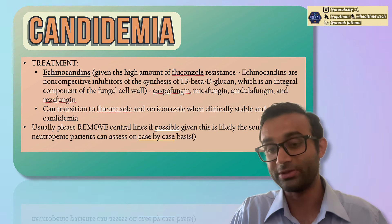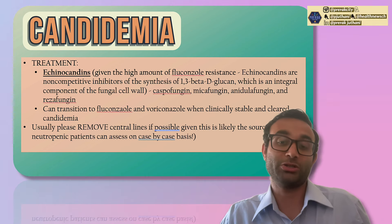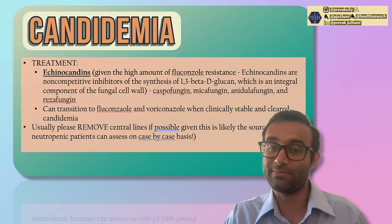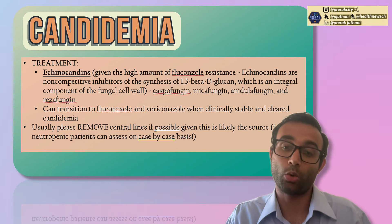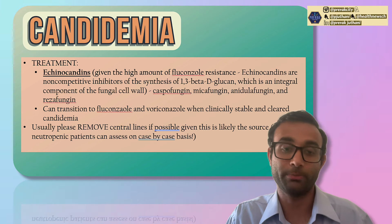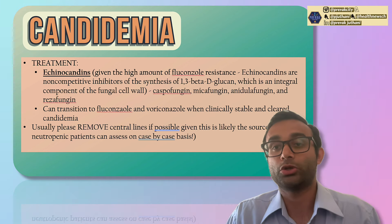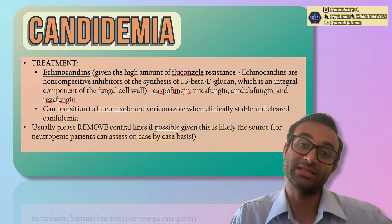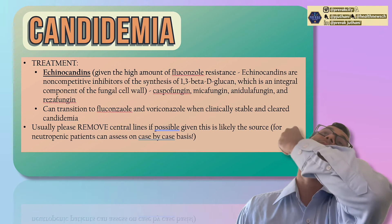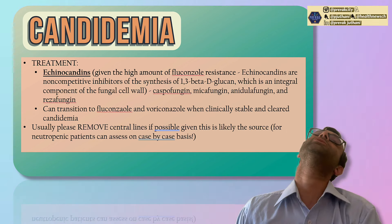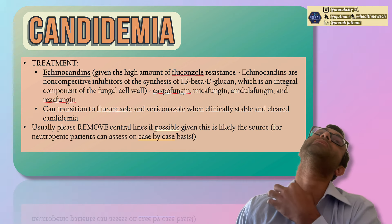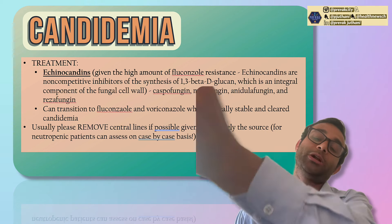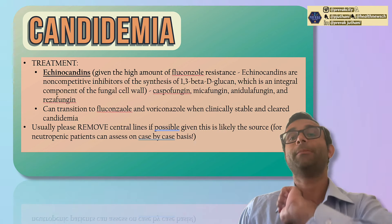When you inhibit 1,3-beta-D-glucan synthesis, the fungus can't make its cell wall and will die. You can treat with caspofungin or micafungin, and as you slowly treat the candidemia, you can transition to fluconazole or voriconazole when the patient is more stable. Also try to remove any central lines, because candidemia is a skin flora — a central line going down to the right atrium or superior vena cava is a very good entry point and likely the source. Remove lines if possible.